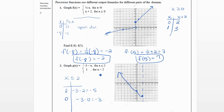For x greater than two, we just plot the constant value one — for every x value we put in, we get one. So it's a constant function, and at x equals two it's going to be an open dot since this piece is strictly greater than two. The output is always one, so it's a constant horizontal line.